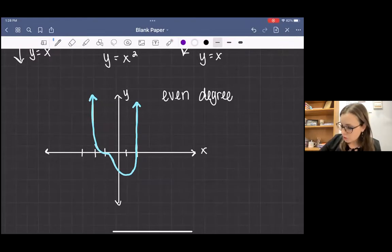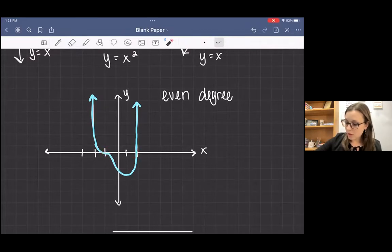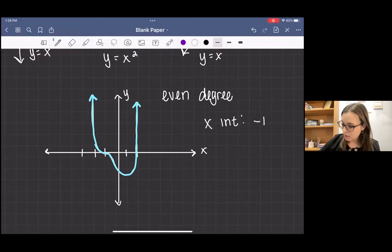Then it looks like I've got two x-intercepts. One is at negative one, and one is at two. So those are my two x-intercepts.